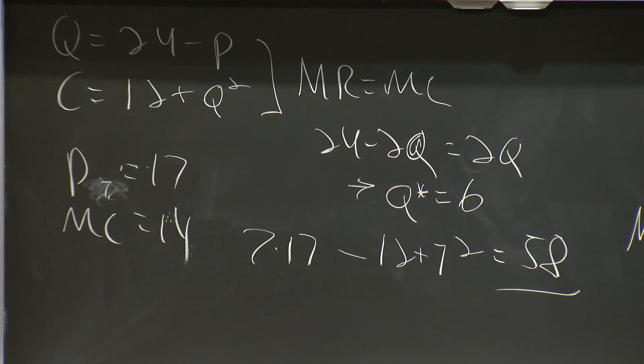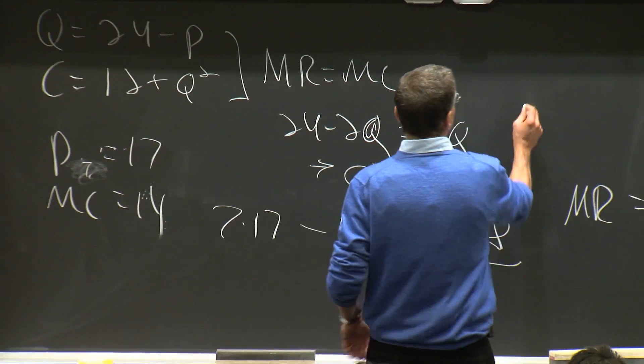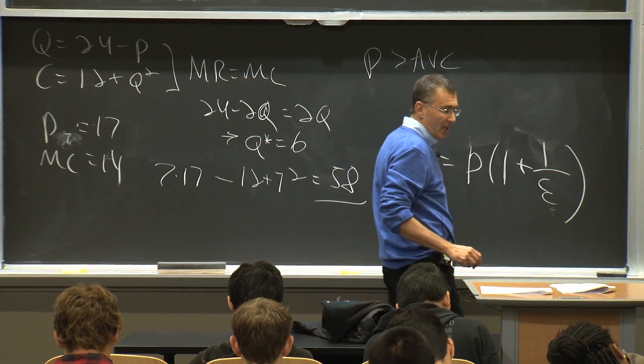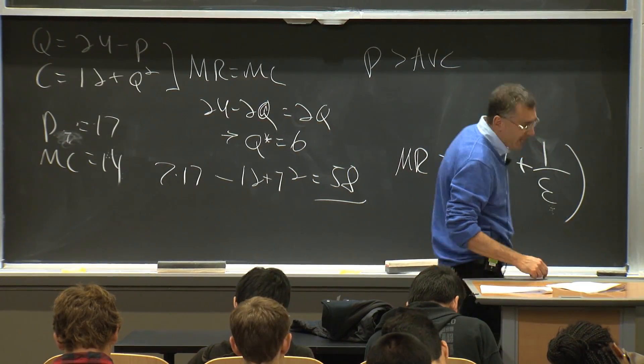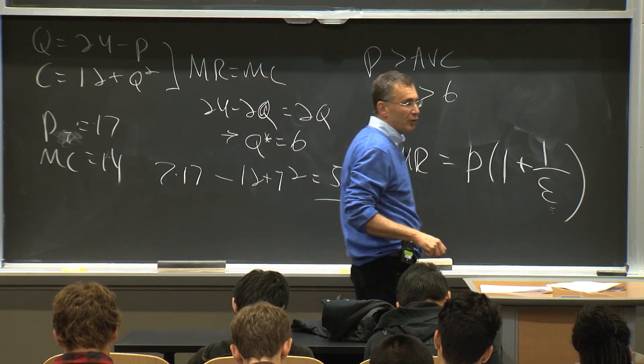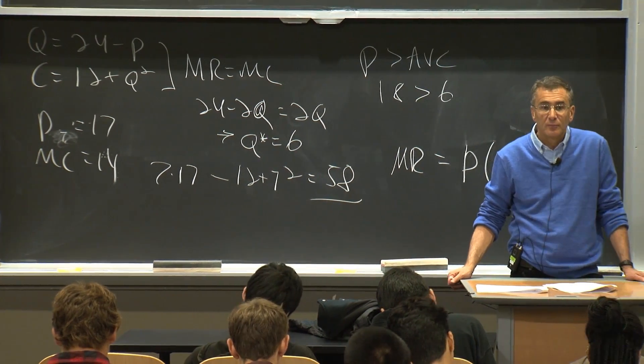Now, notice one last thing. Even monopolists have to obey the shutdown rule. So we also, in the short run, have to always check the shutdown rule condition, which you have to make sure that price is greater than average variable cost. In this case, 18 is greater than 6. So he produces. But remember to check that shutdown rule in the short run.